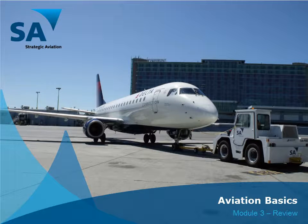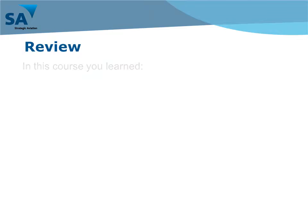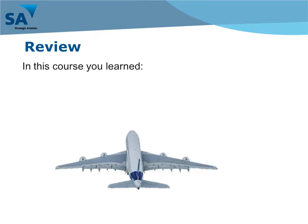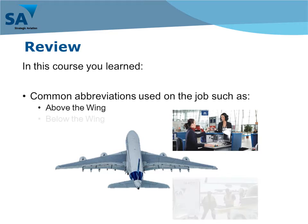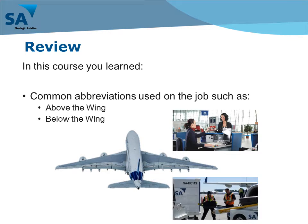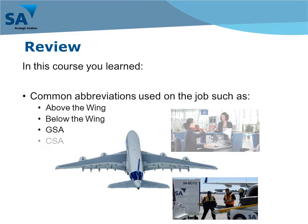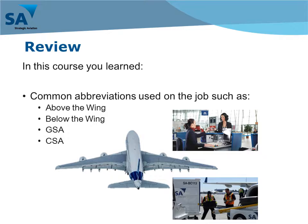Aviation Basics Module 3 Review. In this course, you learned some common abbreviations used on the job, such as above the wing, below the wing, GSA, and CSA.